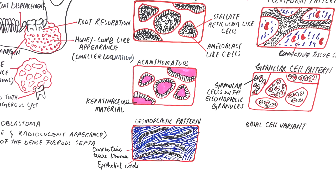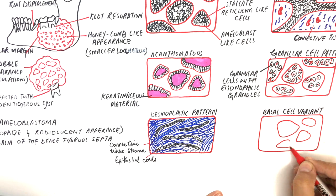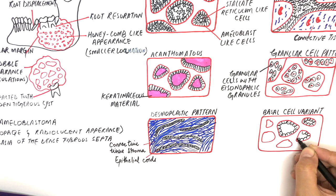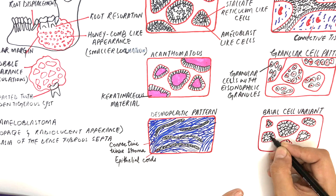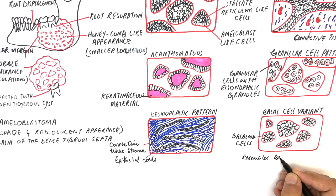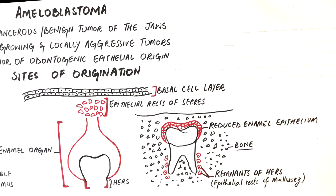The basal cell variant of ameloblastoma is the least common type. It shows excessive proliferation of uniform-looking basaloid cells in several nests. Stellate reticulum or other centrally placed cells are usually absent, and the cells at the periphery are cuboidal rather than columnar in shape. This type often resembles a basal cell carcinoma of the skin.